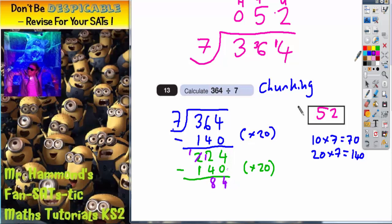Now it's getting a bit more difficult. I'm down to 84. How many chunks of 7 can I subtract now? I've already said that 10 7's are 70. So I could subtract 10 chunks of 7, which are 70. 4 take away 0 is 4. 8 take away 7 is 1. So I'm now down to 14.